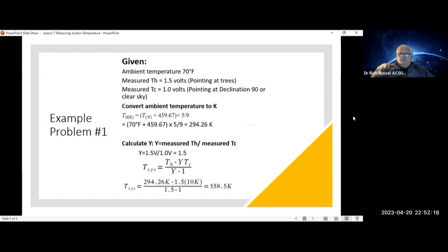Put all this into the equation, and that'll give you 294.26 Kelvin minus 1.5, which is your y-value, times 10 Kelvin, all divided by 1.5 minus 1, equals 558.5 Kelvin.